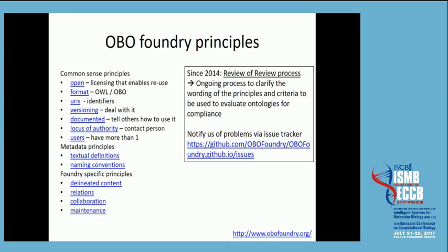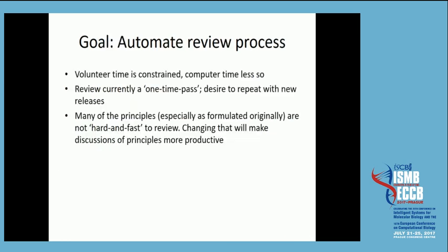If there are any problems, there is an issue tracker on the OBO Foundry website, so submit issues there. One of the things that is most limiting, as this is a volunteer project, is time. Having a great review process and criteria of what makes a good ontology is one thing, but if it takes a lot of time to figure out if an ontology complies or not, that is a problem. So we would love to automate the review process as much as possible. An automated review also lets you focus on things that you can make into a hard and fast rule.